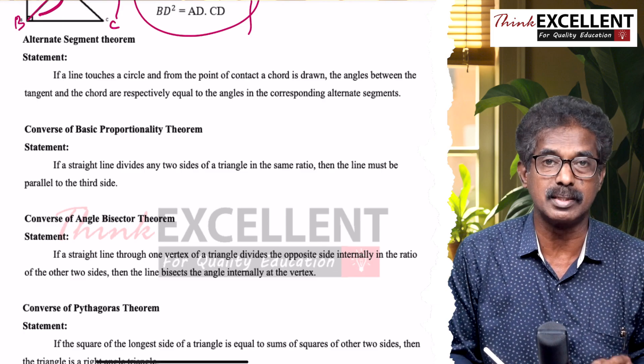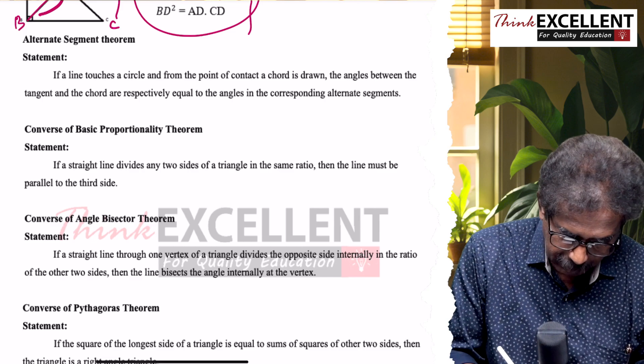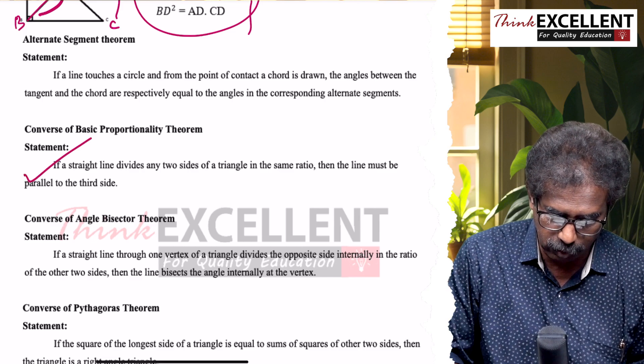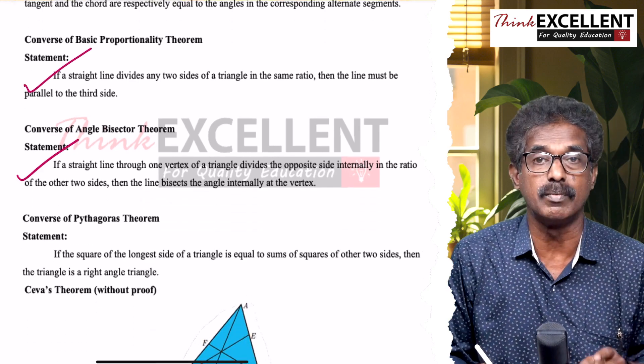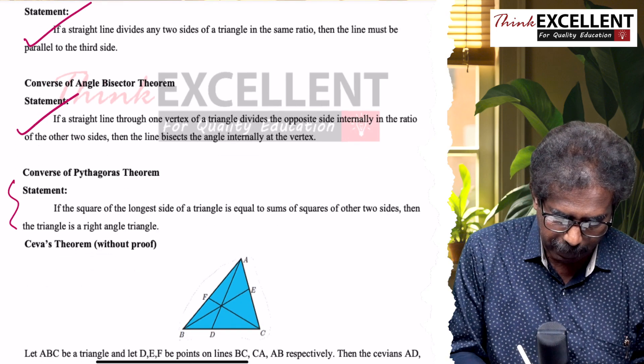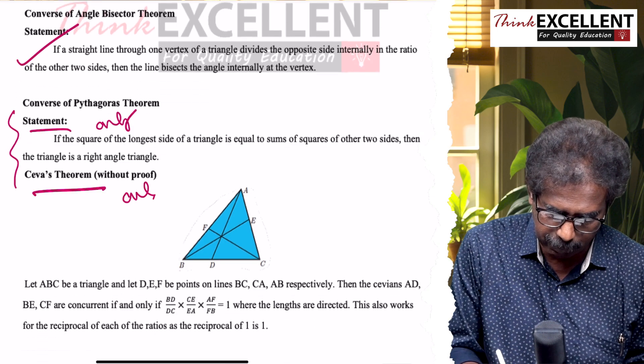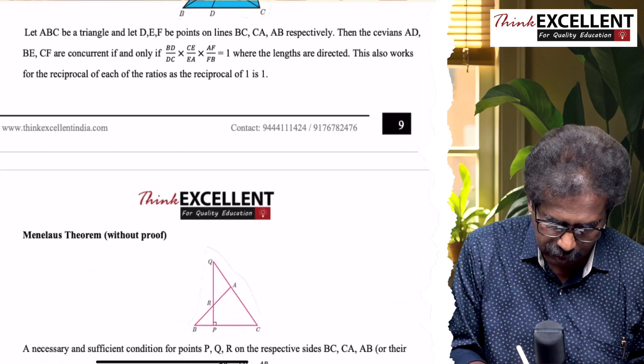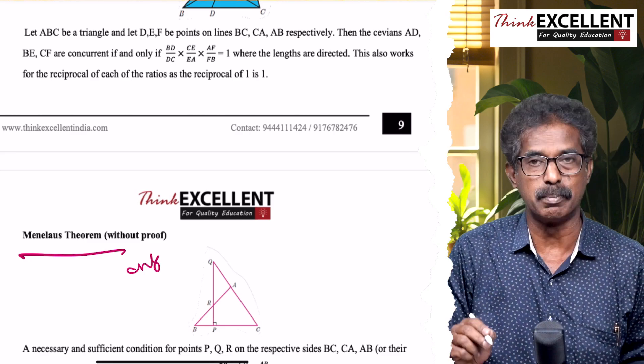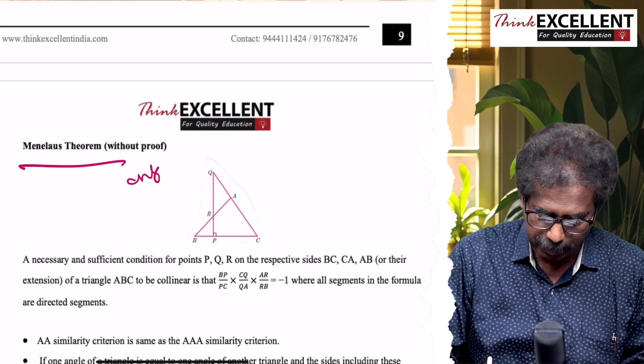Alternate segment theorem - statement and proof you have to study. Converse of basic proportion, proof you have to study. Converse of angle bisector theorem, proof you have to study. Either only statement: converse of Pythagoras theorem only statement, Ceva's theorem only statement, Menelaus theorem also only statement. This proof you have to study.